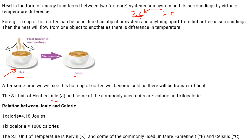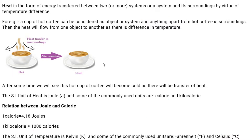The SI unit of heat is Joule. Commonly used units are calorie and kilocalorie. One calorie is 4.18 Joules and one kilocalorie is 1000 calories. The SI unit of temperature is Kelvin — not degree centigrade, though Fahrenheit and Celsius are commonly used units. There are various conversions between these scales.